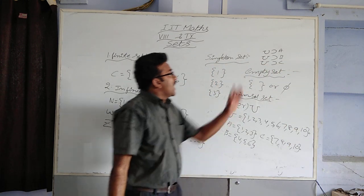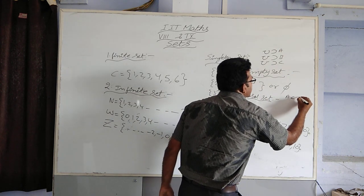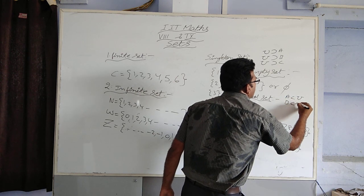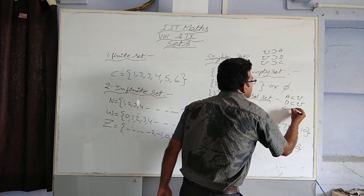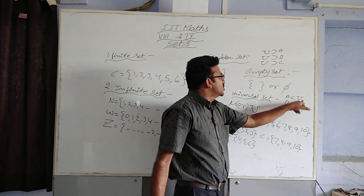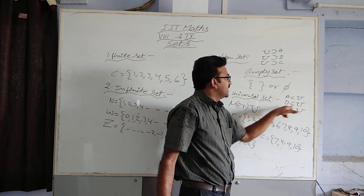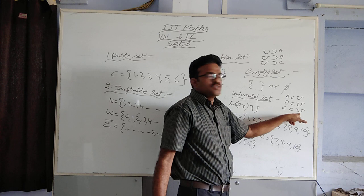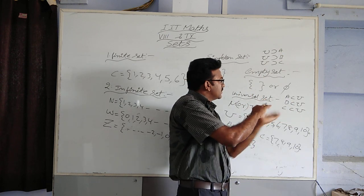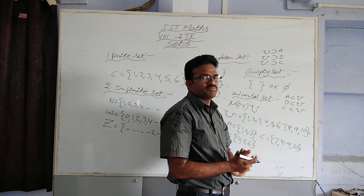And also, the reverse: A is a subset of μ, B is a subset of μ, C is a subset of μ. That means A is contained in the superset, B is contained in the superset, C is contained in the superset. Superset means the reverse direction; subset means the opposite direction.